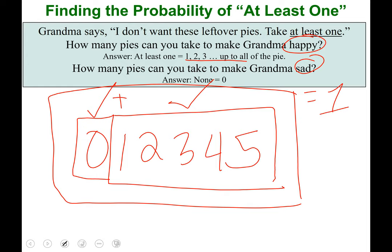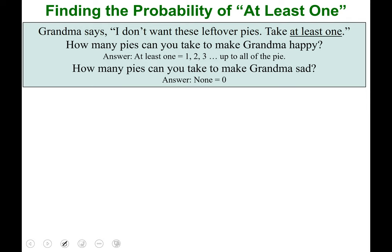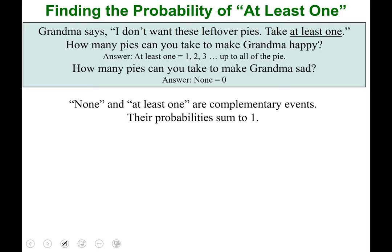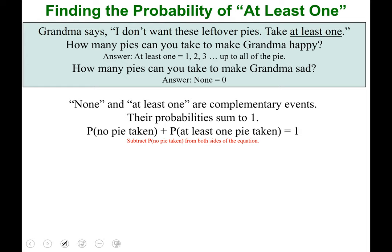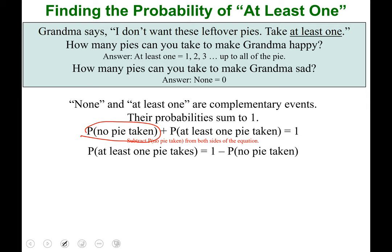None and at least one are complementary events — their probabilities add to one and they can't occur at the same time. The probability of no pie taken (zero pies) plus the probability of at least one pie taken equals one. If we manipulate this equation and subtract the probability of no pies taken from both sides, we get: probability of at least one pie taken equals one minus the probability of no pie taken.